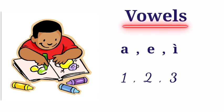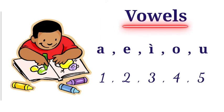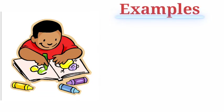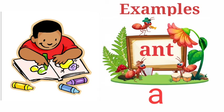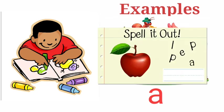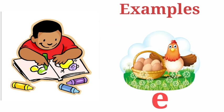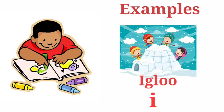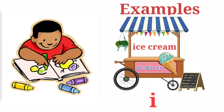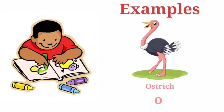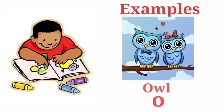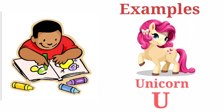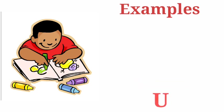Let's see with the examples. A for ant, apple. E for egg, elephant. I for igloo, ice cream. O for ostrich, owl. U for unicorn, umbrella.